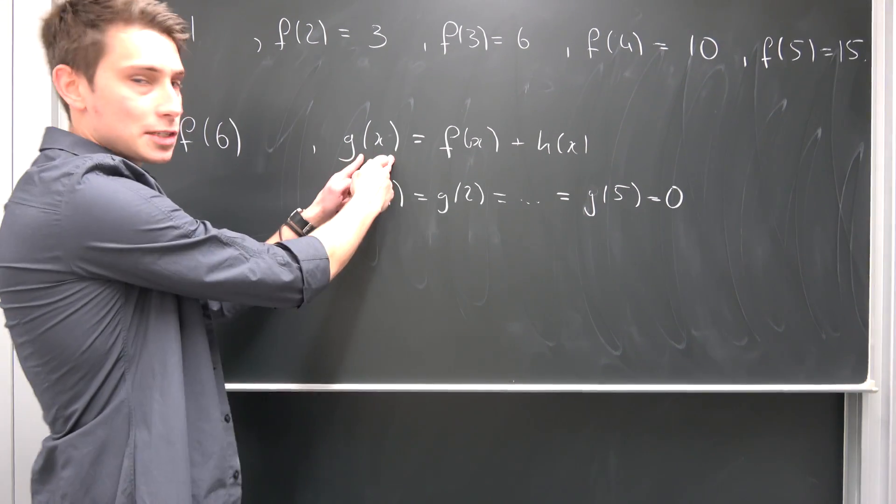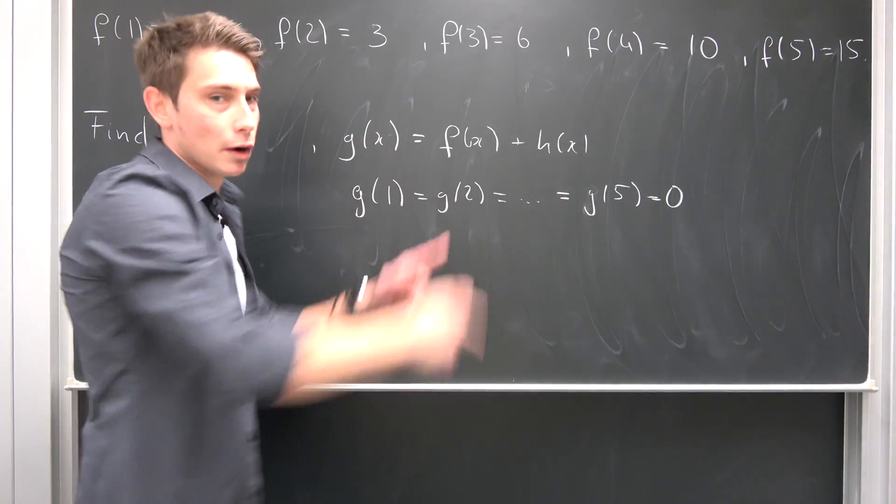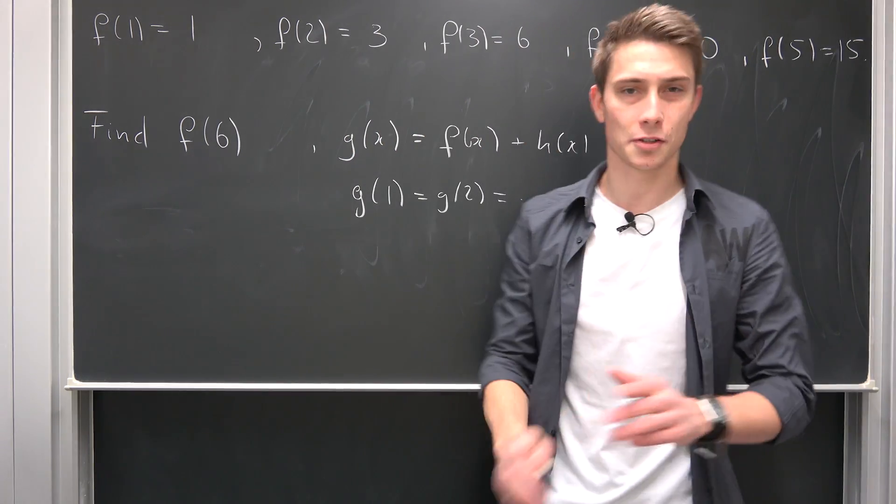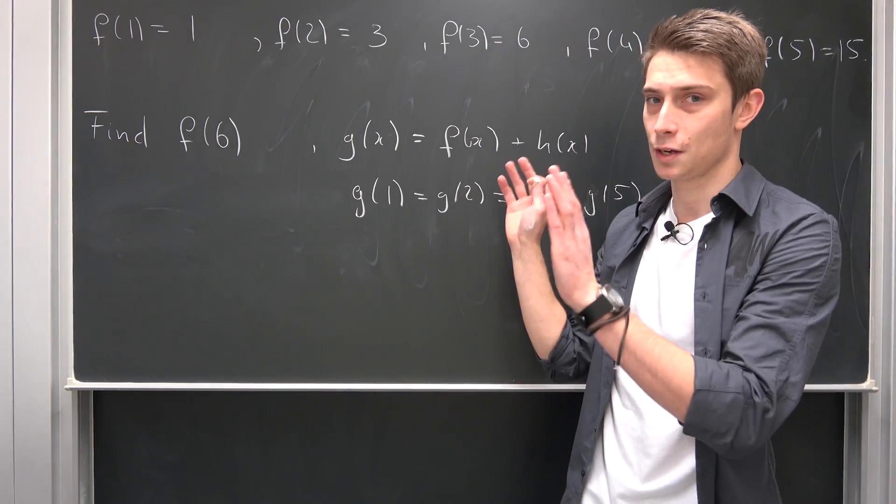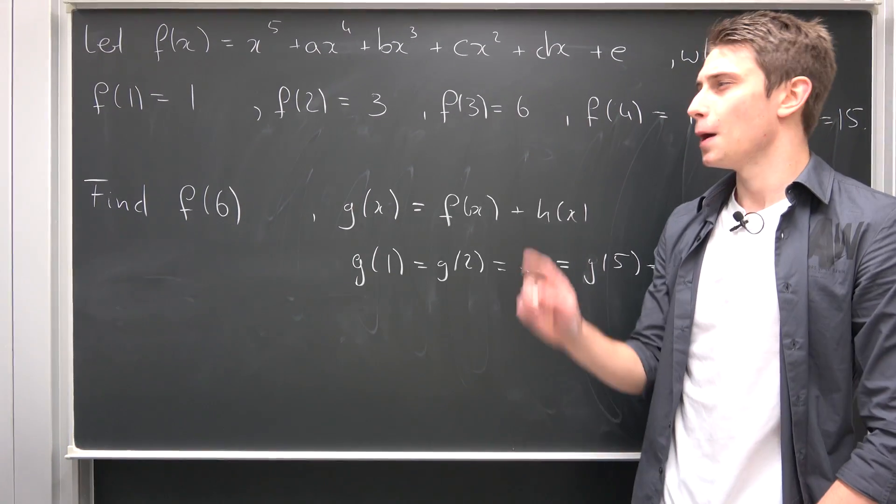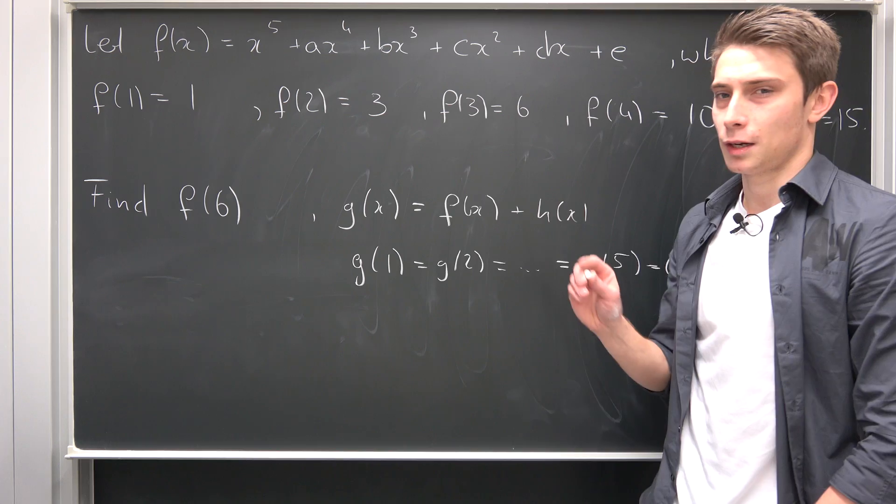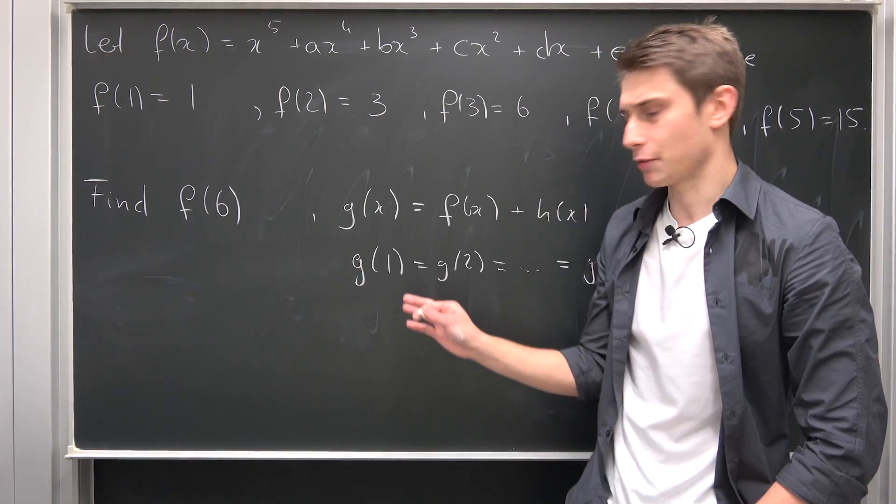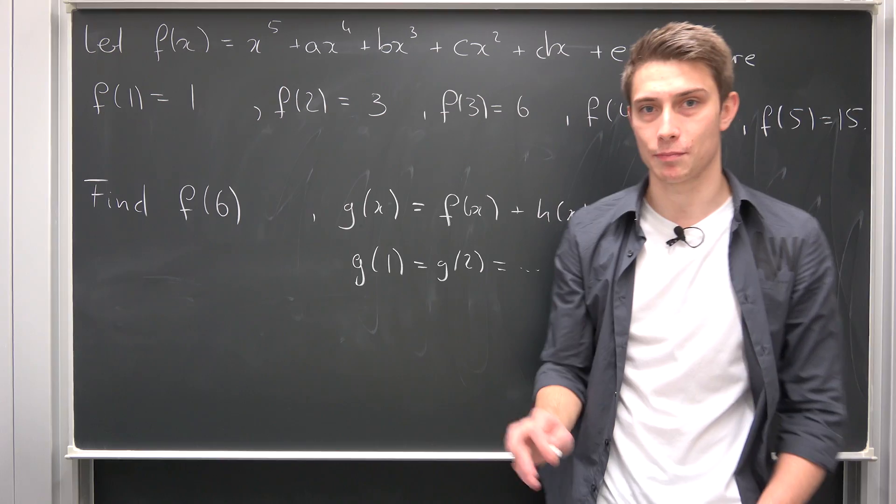Such that we can factor this thing right here to find out our f of x in the end. So this is a strategy you might have seen before. It's often used in algebra and abstract algebra. Okay. How would you go on with something like this? So how can we actually find out our h of x for example?